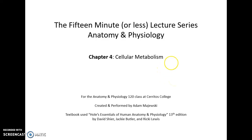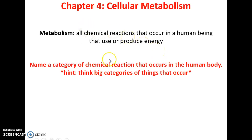Welcome to the 15-minute-or-less lecture series: anatomy and physiology, chapter four — cellular metabolism. Metabolism is all the chemical reactions that occur in a human being, or anything that produces or uses energy. When we break things down through digestion, that's metabolism. When we take small components and build them back up to form the various structures inside our body, that is also metabolism — lots and lots of things going on in our body.